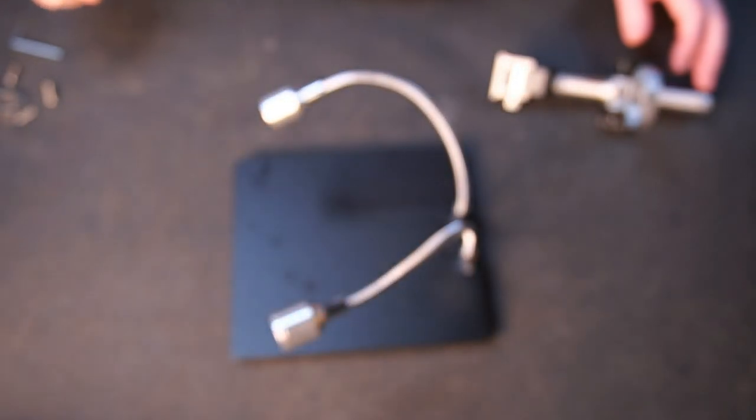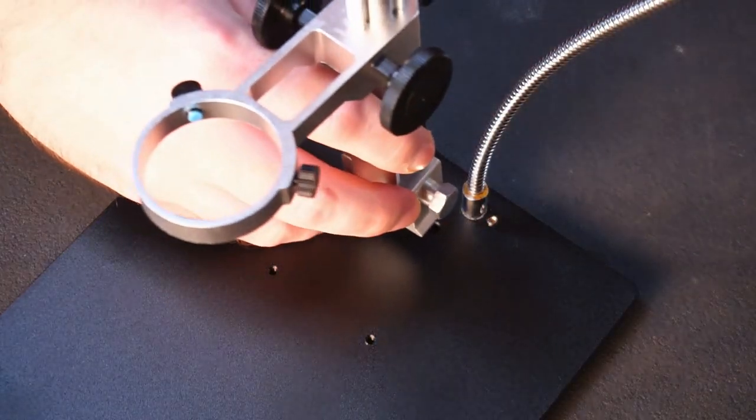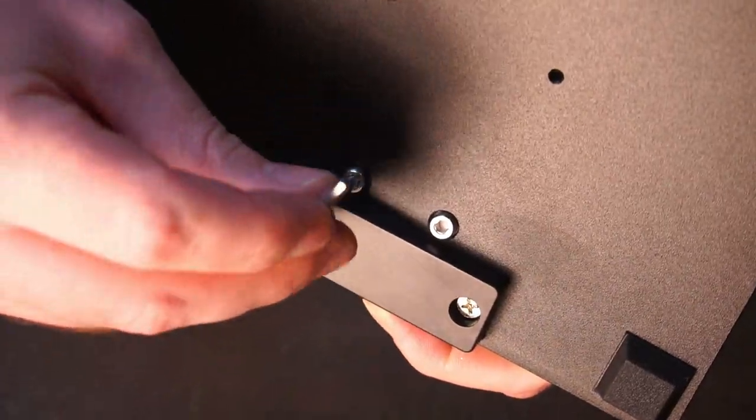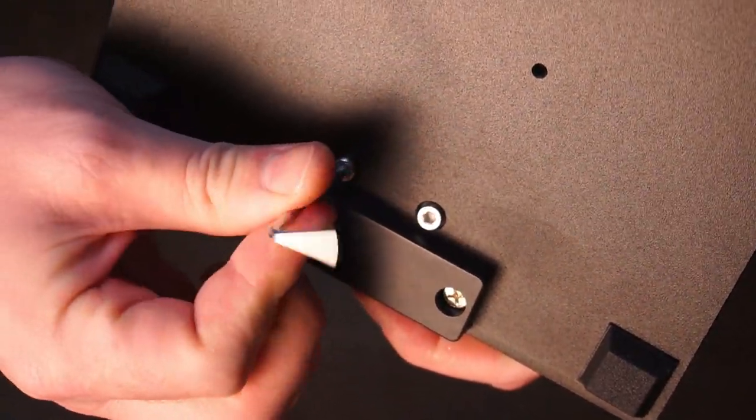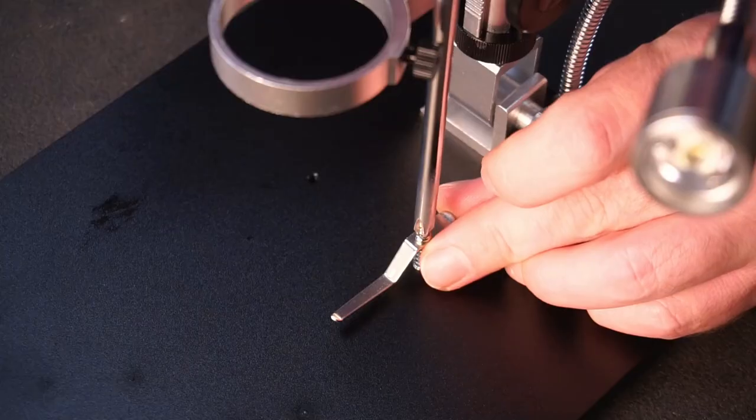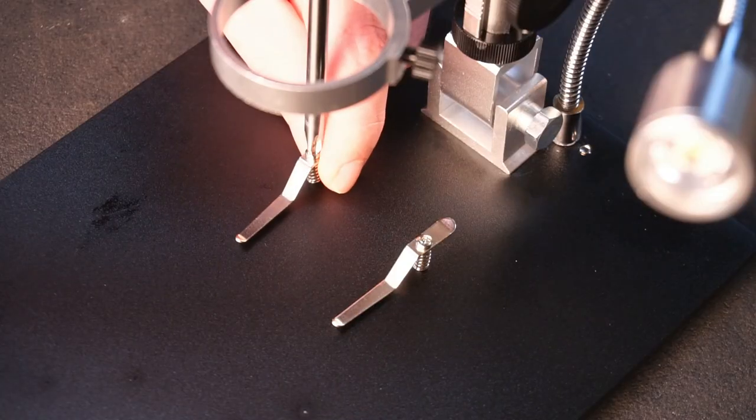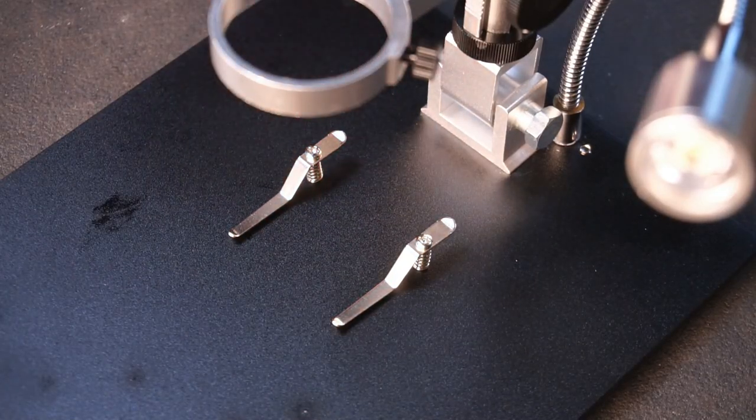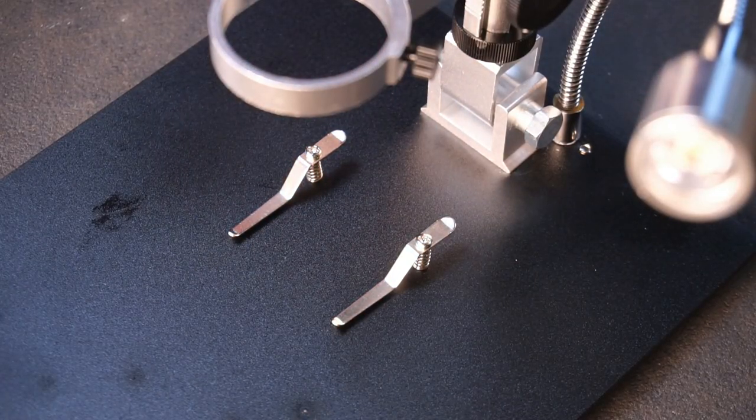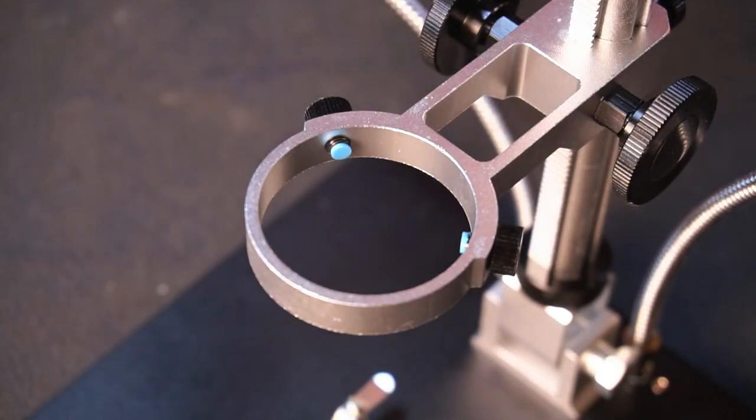To assemble the microscope, first use the included screws to attach the stand. Optionally you can install two spring-loaded arms onto the base. Typically these are used to hold a glass slide or a PCB from moving around while you're working on it.